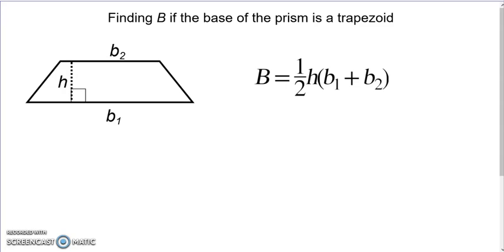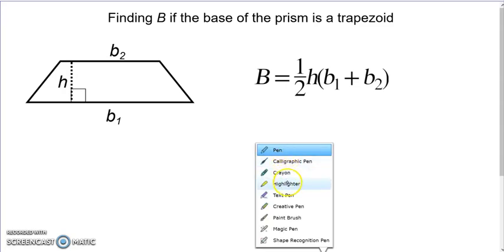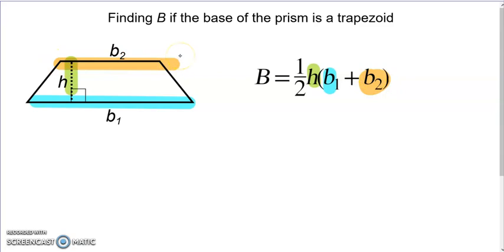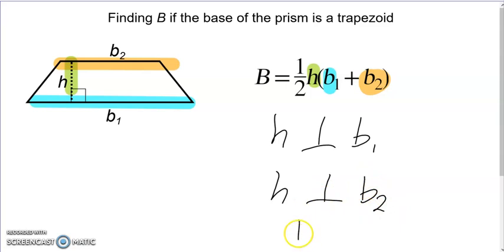For a trapezoid, the area is one-half times height times (base one plus base two). The bases are always the parallel sides. We take the height of the trapezoid, add the two base measurements together, multiply by the height, and divide by two. The height is always perpendicular to both bases, and base one is always parallel to base two in a trapezoid.